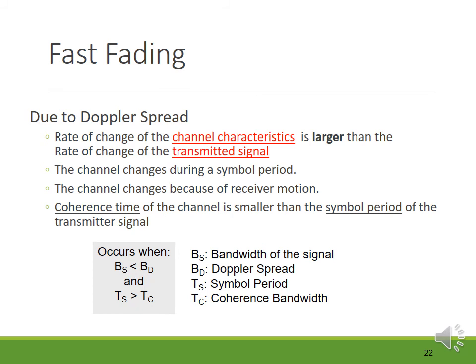Fast fading is due to Doppler spread. Here the rate of change of channel characteristics is larger than the rate of change of the transmitted signal. In a fast fading channel, the channel impulse response changes rapidly within the symbol duration — that is, the coherence time of the channel is smaller than the symbol period of the transmitted signal. Fast fading occurs when the transmitted signal bandwidth is less than the Doppler spread, and the symbol duration is greater than the coherence time.